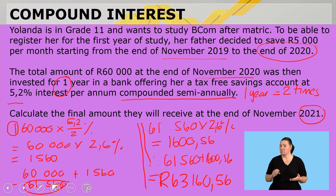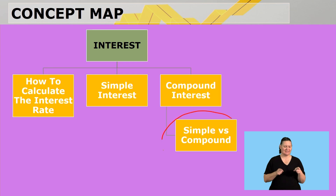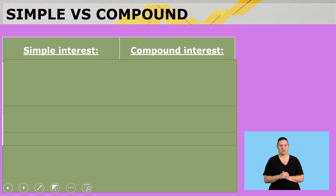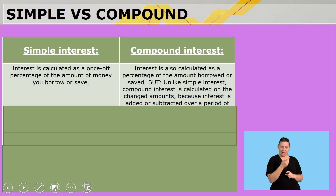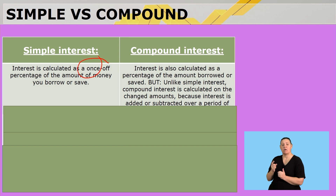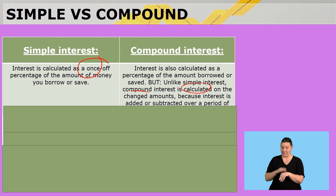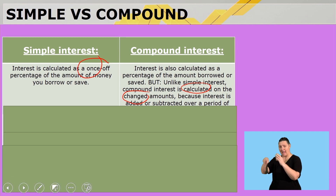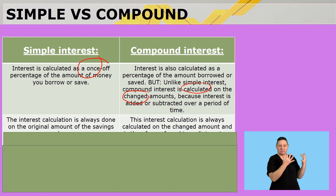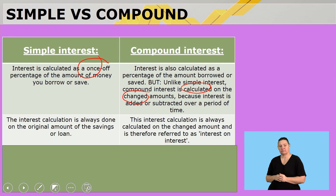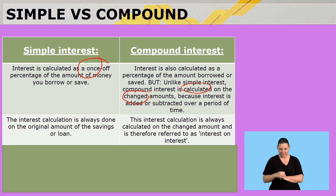Let's look at the difference between compound and simple interest. With simple interest, interest is calculated as a once-off percentage of the original amount borrowed or saved, and the amount remains the same. With compound interest, it is calculated as a percentage on the changed amounts — interest on interest. With simple interest, the calculation is always done on the original amount of the savings or loan. With compound interest, the interest is calculated on the changed amount each time.